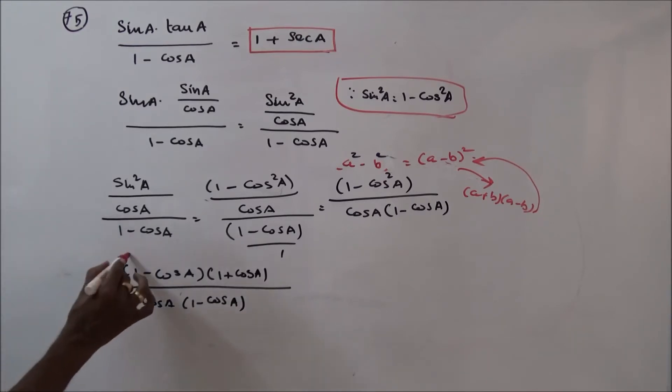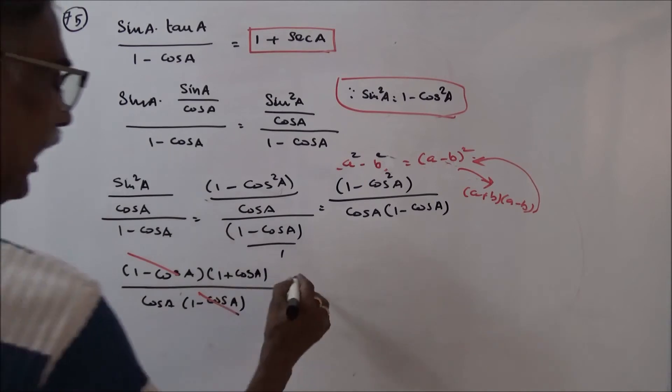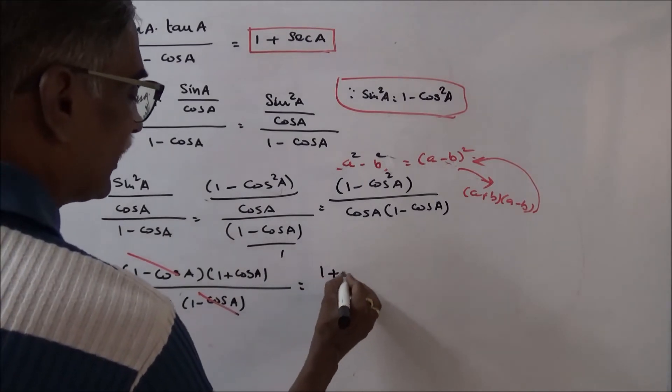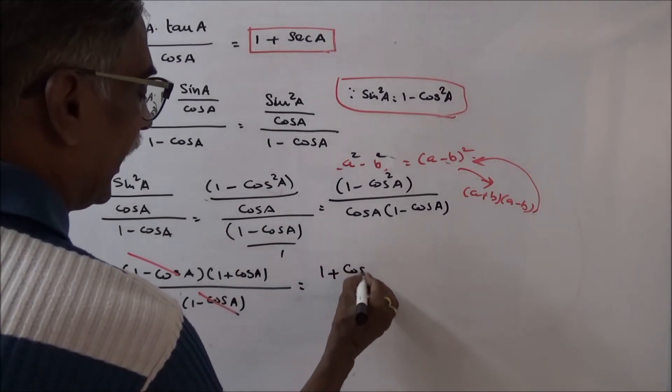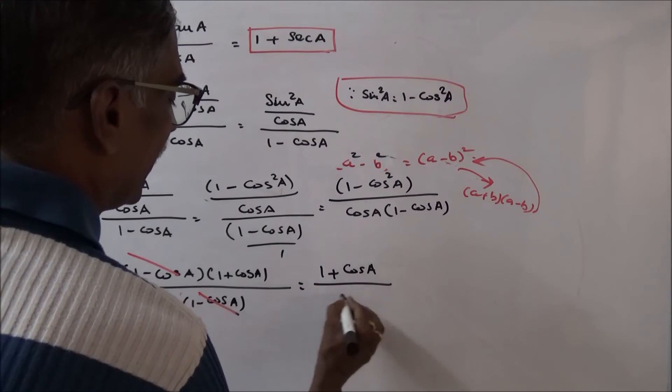Here the two 1 minus cos A terms cancel — 1 minus cos A in the numerator and 1 minus cos A in the denominator cancel out. So we are left with 1 plus cos A divided by cos A.